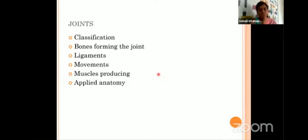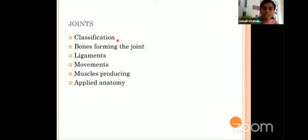Coming to the joints. These are the general points under which you are supposed to describe a joint. First, how you are going to classify the joint. Second, what are the bones forming the joint. Third, the ligaments that are holding the bones in position. Fourth, what are the movements occurring in the joint and the muscles producing those movements. And finally, as always, applied anatomy.